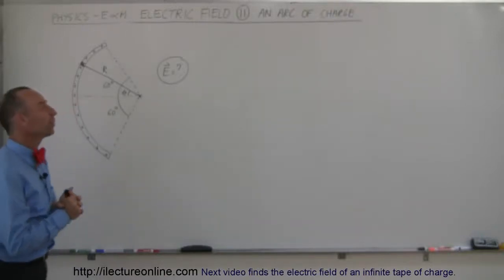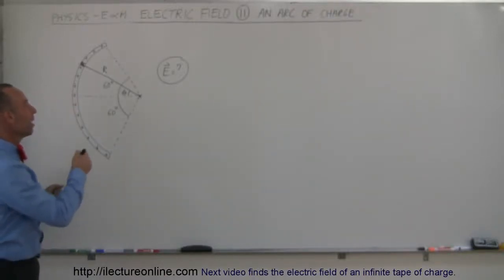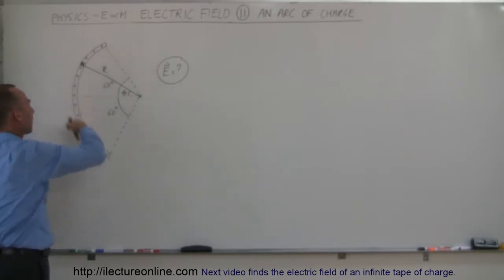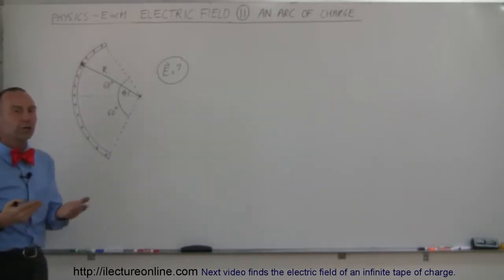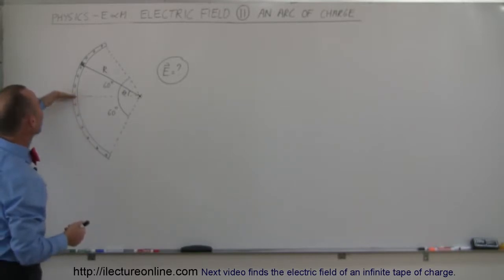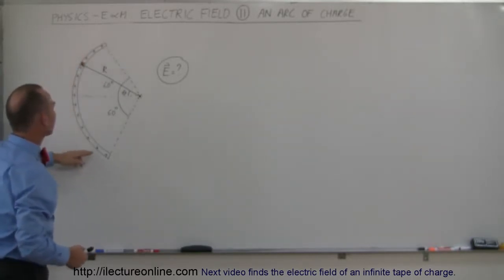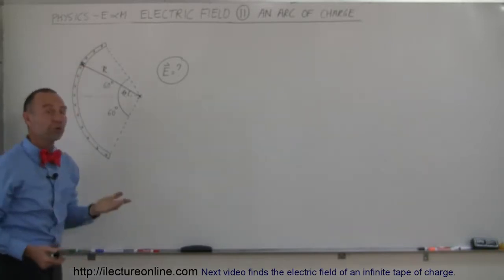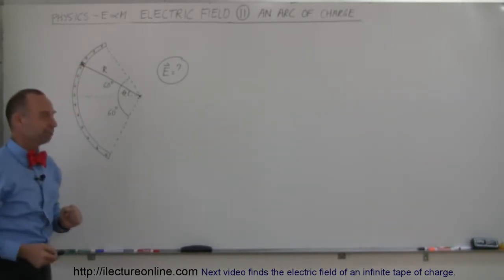Welcome to ElectronLine. We're going to find the electric field of a piece of a circle charged by positive charge — we call that an arc of charge. In this particular case, notice that the arc subtends a total angle of 120 degrees, so it's exactly one-third of a circle.